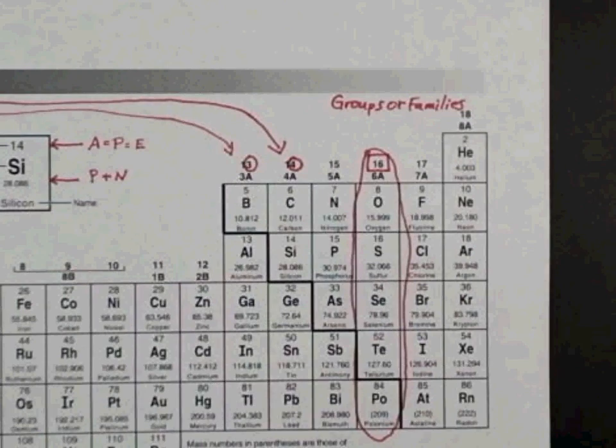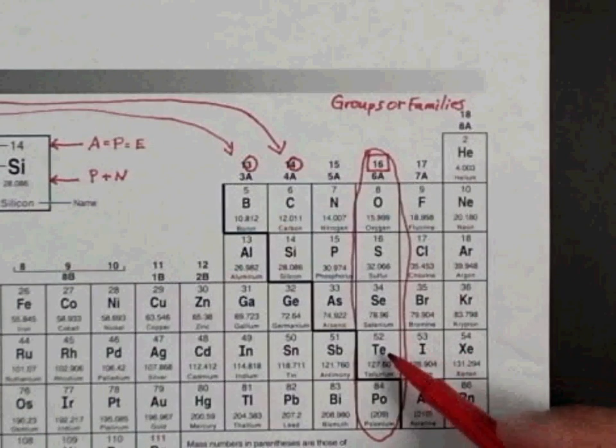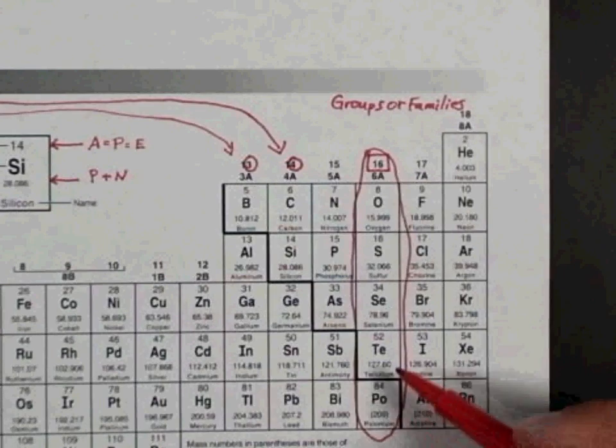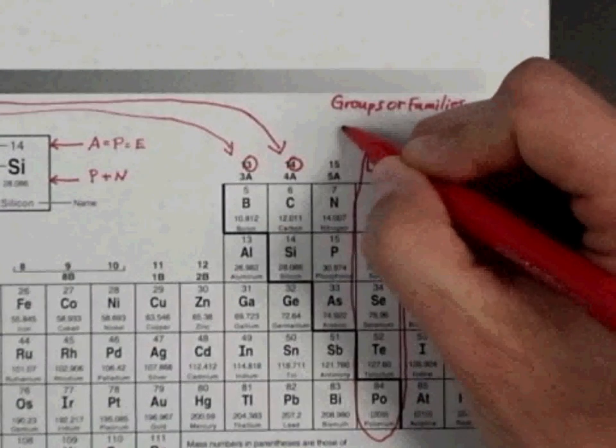I don't want you to confuse the group number with the valence electron number. So in this particular case, oxygen, sulfur, selenium, tellurium, they're all going to have similar reactivity.